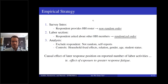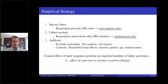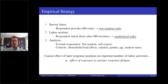In the survey, the respondent provides a household roster in a non-random order. In the labor section, however, when we reach that section, the respondent is asked about all other household members in a randomized order — we take the original listing and mix it up when we get to data collection. In the analysis, we exclude the respondent and control for household fixed effects, relationship to the respondent, gender, age, and other variables. This allows us to identify the causal effect of being in a later response position on the number of labor activities reported — which we interpret as the effect of exposure to greater response fatigue.